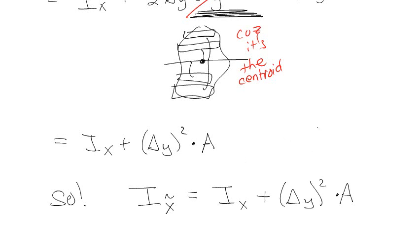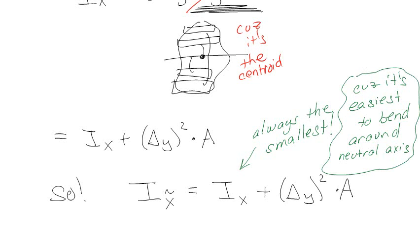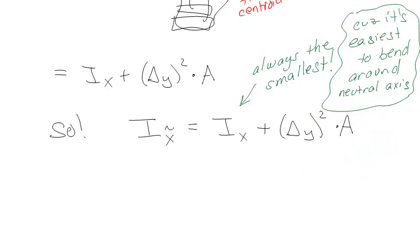Okay, so it should look pretty similar, and you should just remember there's that Y squared dA sense, and so that still kind of looks like Y squared dA. Okay, but you also have to remember that this is always the smallest, so that IX is always going to be the smallest value, and that's specifically because it's the easiest to bend around the neutral axis, so if I'm moving away from that neutral axis, it's just going to be harder.